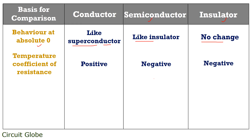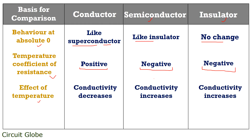The next parameter is the temperature coefficient of resistance, which indicates the change in resistivity of the material with respect to change in temperature. Conductors show a positive temperature coefficient of resistance because with increase in temperature the resistance of conductors increases. Semiconductors and insulators both exhibit a negative temperature coefficient of resistance, as their resistance decreases with increase in temperature. Thus, conductivity decreases with temperature in conductors, while conductivity increases with temperature in semiconductors and insulators.